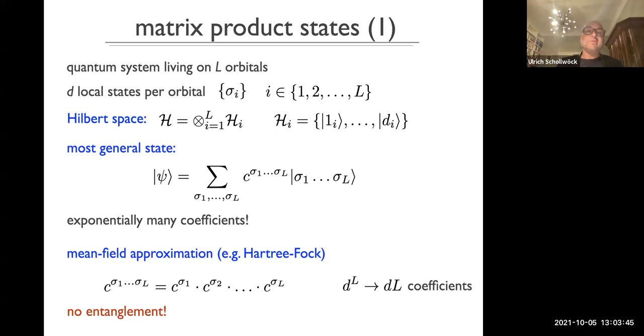These matrix product states, in a very formal way, we imagine a quantum system living on L orbitals or L states. We have D local states per orbital, which I will call generically sigma I. The Hilbert space is the tensor product of the local states, and the most general state is the one which I write down here with the exponentially many coefficients c. So to motivate the matrix product states, the first idea is to do what we always do in solid state as the first step, to go to a mean field approximation, Hartree-Fock-like.